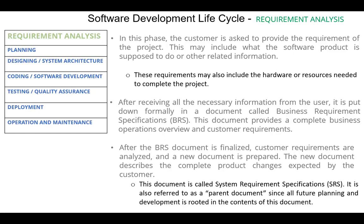This document provides a complete business operations overview and customer requirements. After the BRS document is finalized, customer requirements are analyzed and a new document is prepared. The new document describes the complete product changes expected by the customer. This new document is called System Requirement Specifications, SRS. It's also referred to as a parent document since all future planning and development is rooted in the contents of this document.